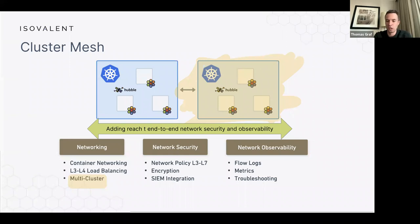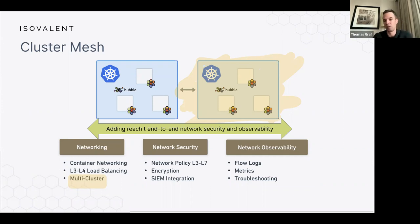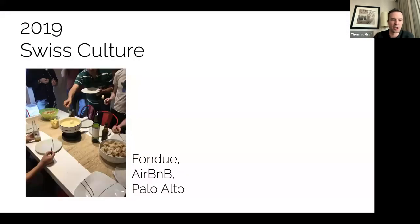Shortly after, we built ClusterMesh — the ability to mesh multiple Kubernetes clusters together while preserving all existing features like network security and network observability, and also introducing global services where you can do load balancing across multiple clusters. Instead of just handling a single cluster, all of a sudden we could handle multiple clusters. We actually presented this back in 2018 at KubeCon, where for the first time we demoed a Kubernetes cluster running in Google Cloud and one in AWS, showing how to mesh them across multiple VPCs.